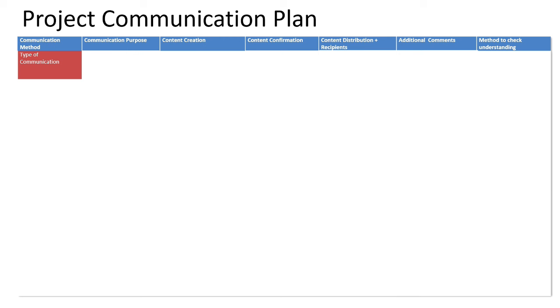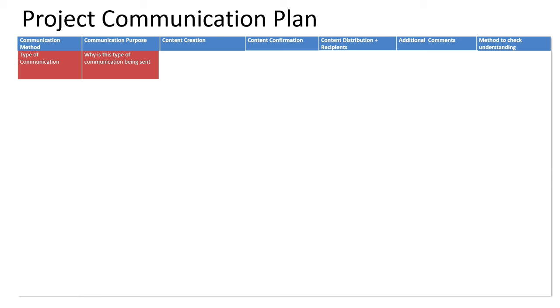Let's talk about each section so you understand what exactly you do in it. Communication method is the type of communication — you really have to think it through. How am I going to communicate with people? Not everybody deserves the same type of communication. You're going to talk to your project team very differently than your steering committee, senior executives, or the department receiving your deliverable. Communication purpose is why this type of communication is being sent.